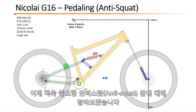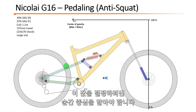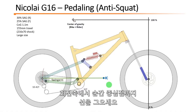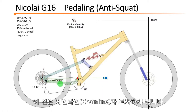Moving on to a more important parameter, the anti-squat — the parameter which determines the pedaling efficiency of the bike. To determine this value you already have the instant center. So now you cross the line between the axle and the instant center, which is the swing arm line, and we will see where this line crosses the chain line.